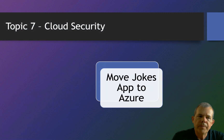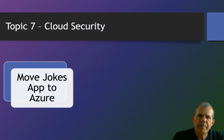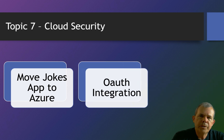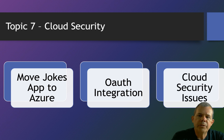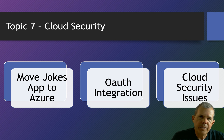In topic seven, we'll go to cloud security. We'll take the jokes app that we've been building throughout the semester and deploy it to Azure — moving it from a local machine to a server on the internet. We'll take a new approach to passwords altogether by eliminating password storage and using OAuth integration, like Google login, so you don't have to worry about saving someone's password. Then we'll get into cloud security issues, which include the same concerns as a local server plus additional items.